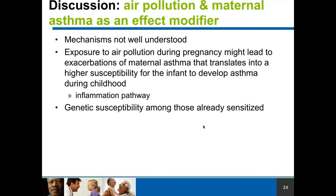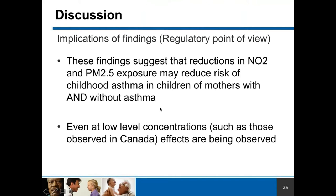In this study we have suggested evidence of effect modification by maternal asthma. The mechanism is not well understood, but exposure to air pollution during pregnancy might lead to exacerbations of maternal asthma, which could translate into higher susceptibility for the infant to develop asthma — perhaps through an inflammation pathway. There could also be an indication of genetic susceptibility among those already sensitized. The exact mechanism is not clearly understood, but it opens up future research in this area.